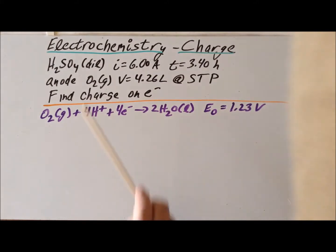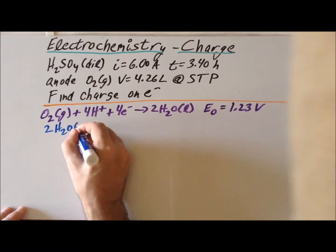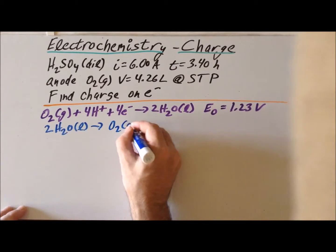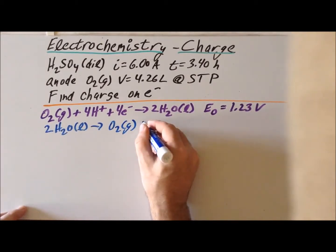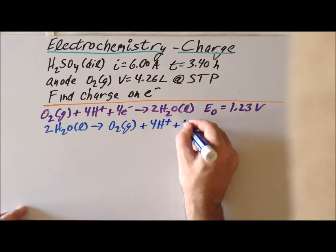Secondly, is that the reaction that takes place at the anode is an oxidation. And if we look in the table, the reaction in the table is written as a reduction. So the actual reaction that is taking place that we are concerning ourselves with is actually the reverse of this, which takes place at the anode. So we have two H2O liquid generating one mole of oxygen gas plus four hydrogen ions and four electrons.